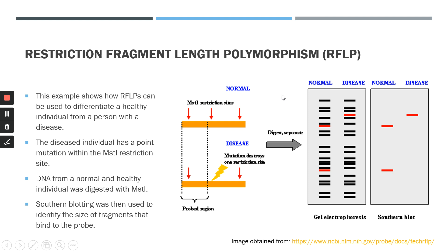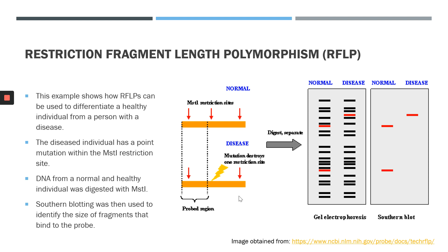Using the same concept, RFLPs can be used to differentiate between individuals who are healthy and individuals who have a disease. In this example, an individual with the disease has a point mutation in the MST1 restriction site, whereas a normal or healthy individual would have an MST1 restriction site present. So we can determine if the individual has the disease using RFLP analysis. Genomic DNA is extracted from both the normal and the diseased individual, then digested with the MST1 restriction enzyme and resolved on an agarose gel.